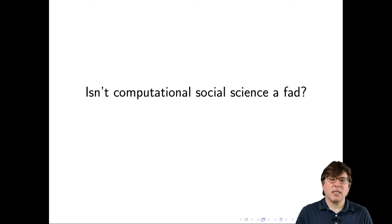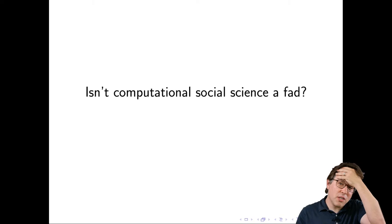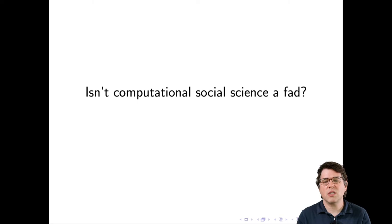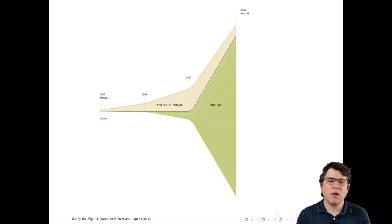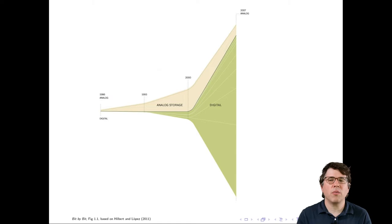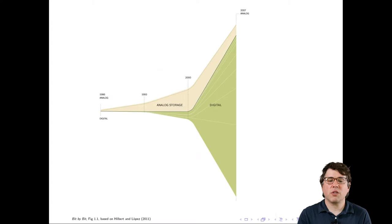Now I will tell you another question I get asked frequently: isn't computational social science just a fad? And here I have a much simpler answer — no. It's not a fad because it's being driven by a fundamental change in the world. This graph shows the amount of information stored in the world. There are two patterns: first, the amount of information is expanding very quickly; and second, more and more of this information is now stored digitally. It is this transition from the analog age to the digital age that is the fundamental driver of a lot of the opportunities in computational social science.